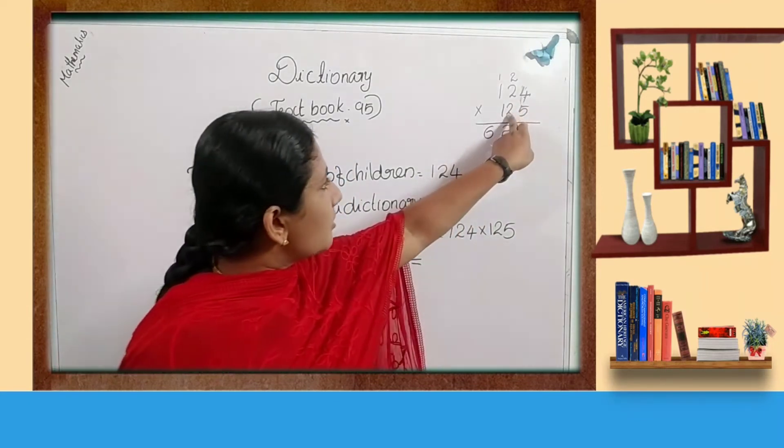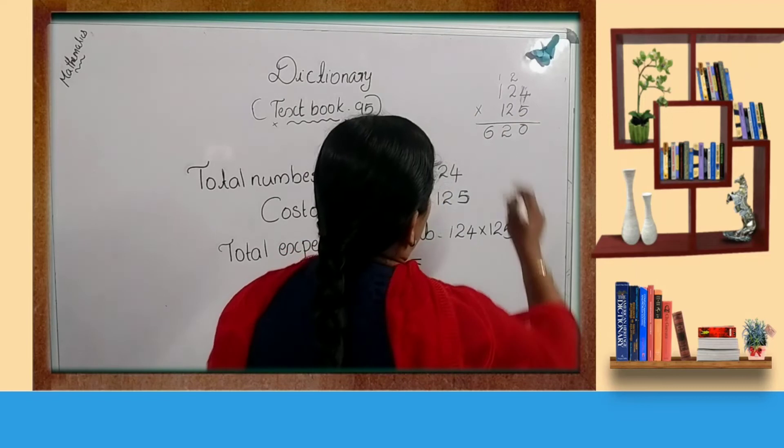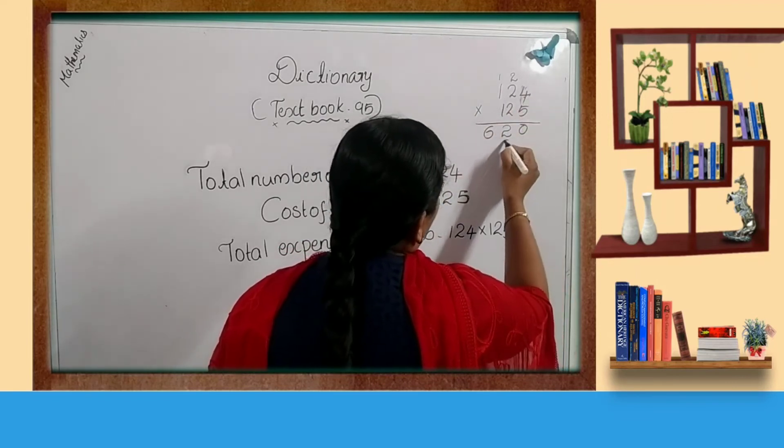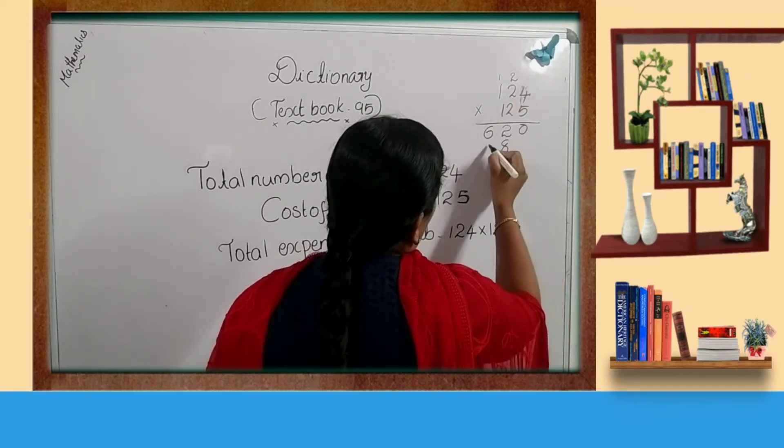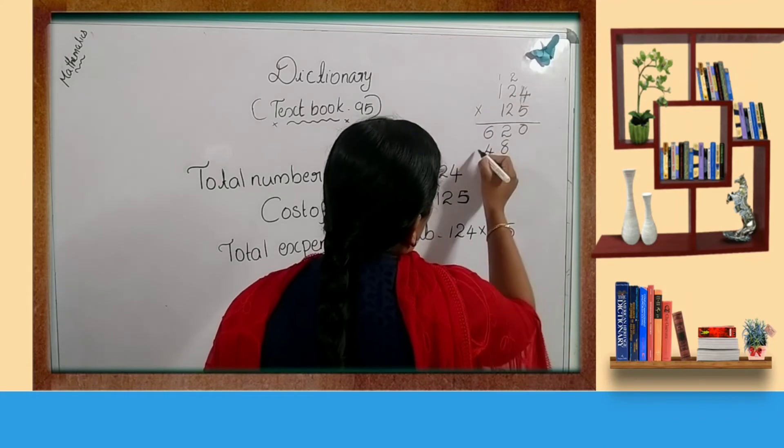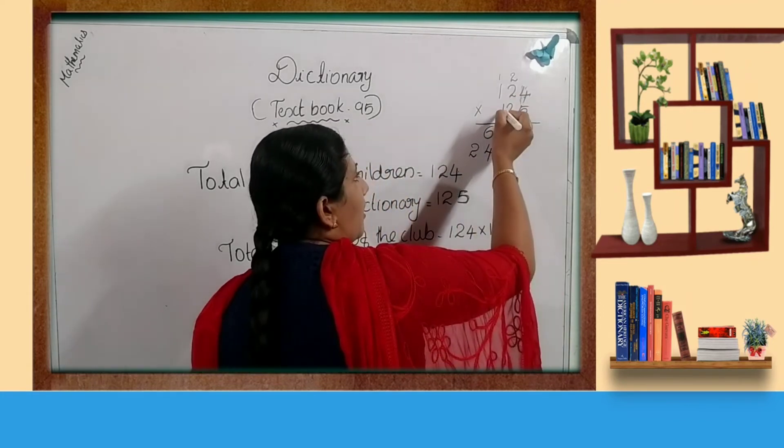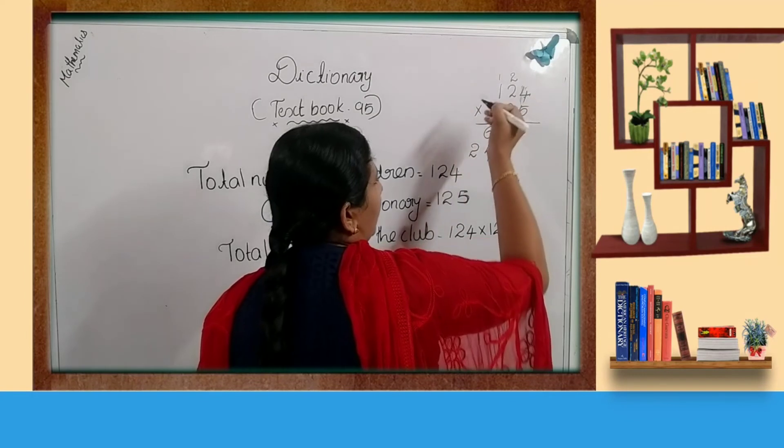Let us multiply this 2 by these 3 digits. 4 twos are 8, 2 twos are 4, 1 twos are 2. And which is the next number? 1.